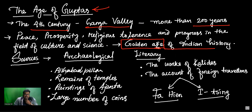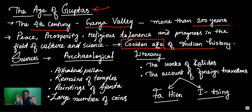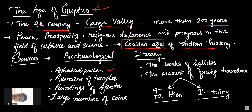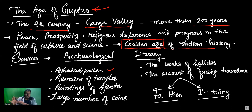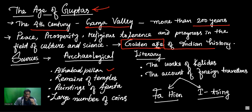So this is the golden age of Indian history. Now let's talk about the sources of the Gupta period. There are two main categories: one is the archaeological sources, and the second is the literary sources. Under archaeological sources, the first important source is inscriptions — there is a lot written about the Gupta time.